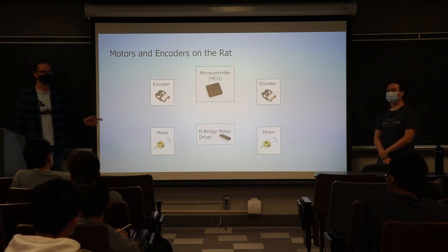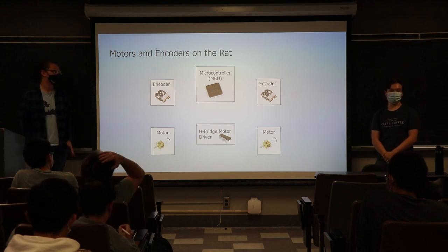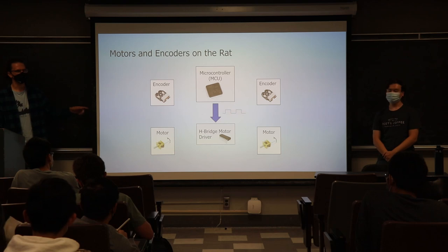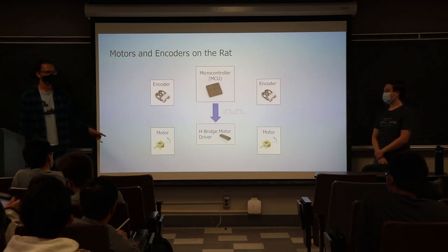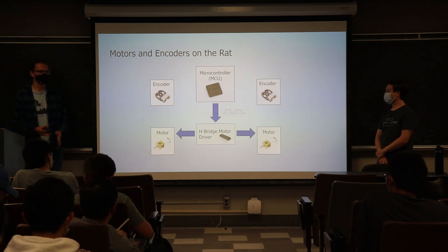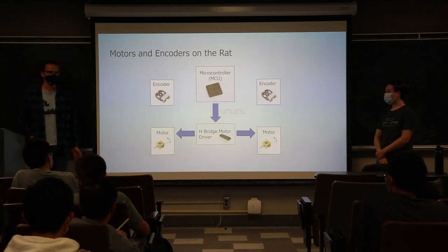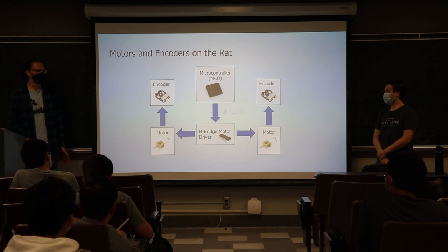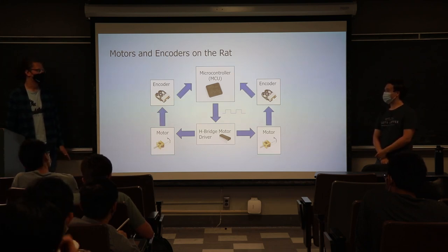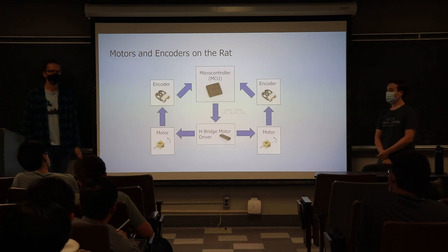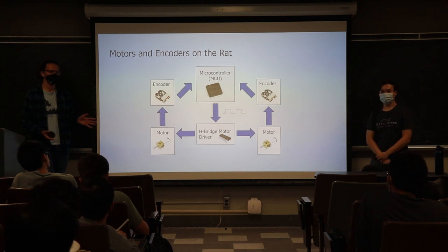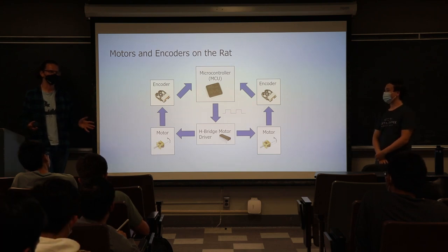Here's a visual overview of what we're going to talk about today and how it all fits together. Our microcontroller on our RAT is what we use to control everything. We send a signal to our motor driver, our H-bridge, and from that it sends a signal to our motors, which then spin. As they spin, that rotation is measured by our encoders, which send that information back to the microcontroller. That's how our motor control system works at a high level.